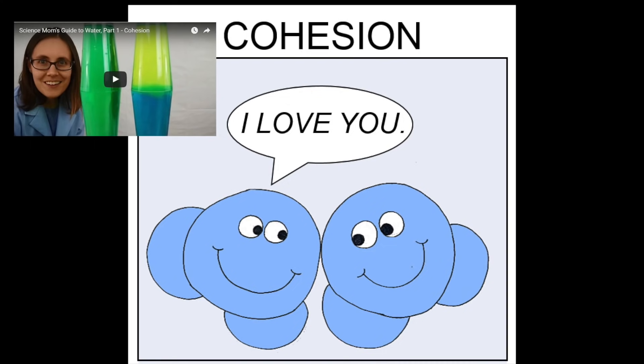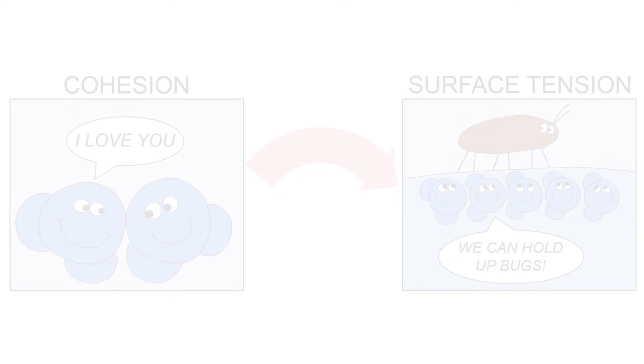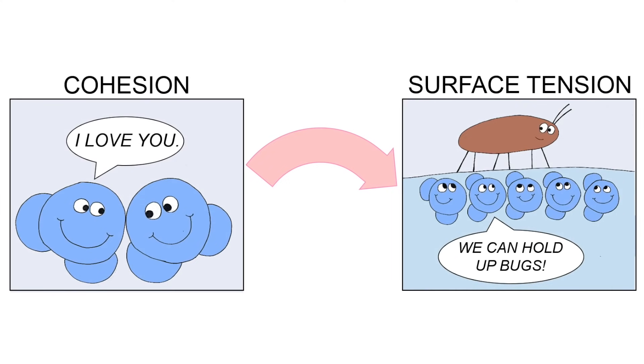You might be thinking, wait, that's the property we learned about in part one. It means water molecules really like each other, but it's not the same as surface tension. And you're right. Cohesion and surface tension are not the same, but cohesion is why surface tension works.